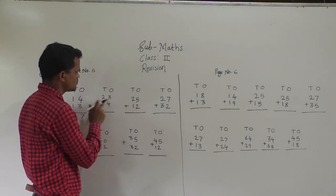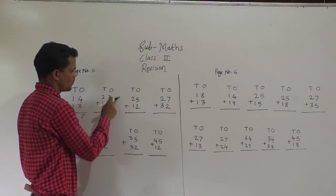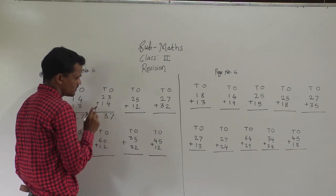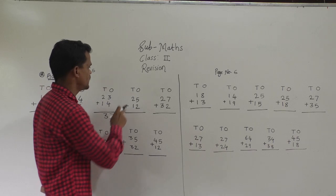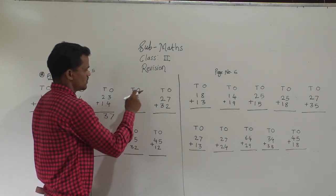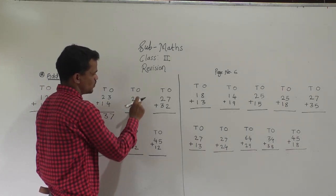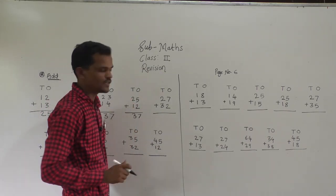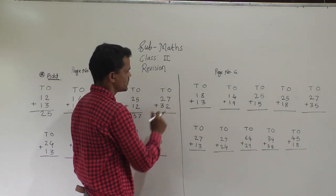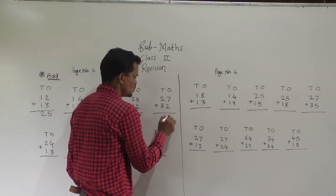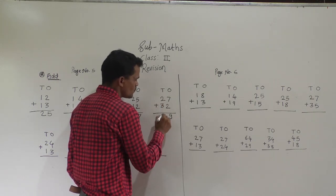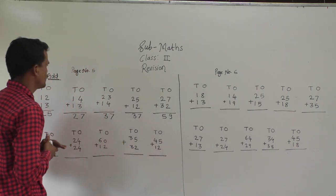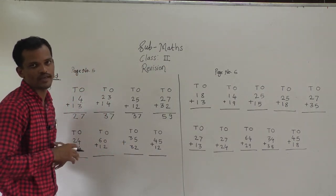Then 23 plus 14 — start from the ones place. 3 plus 4 is 7, 2 plus 1 is 3, so 37 is the answer. Then 25 plus 12 — start from the ones place. 5 plus 2 is 7, 2 plus 1 is 3, so 37 is the answer. Then 27 plus 32: 7 plus 2 is 9, 2 plus 3 is 5. You can observe these examples are without carry forward.